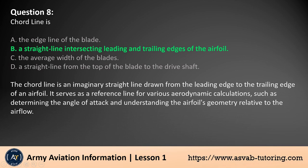The cord line is an imaginary straight line drawn from the leading edge to the trailing edge of an airfoil. It serves as a reference line for various aerodynamic calculations, such as determining the angle of attack and understanding the airfoil's geometry relative to the airflow.